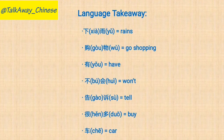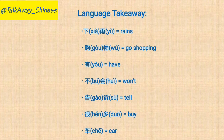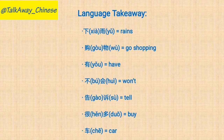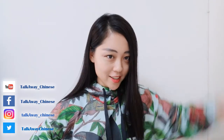Language takeaway: key vocabulary from this lesson includes 下雨 (rain), 购物 (go shopping), 告诉 (tell), 很多 (a lot of), and 车 (car). Hope you liked this lesson — I'm looking forward to your comments. I will see you next time!